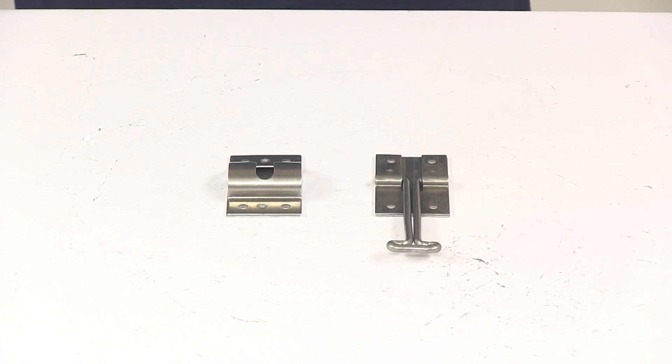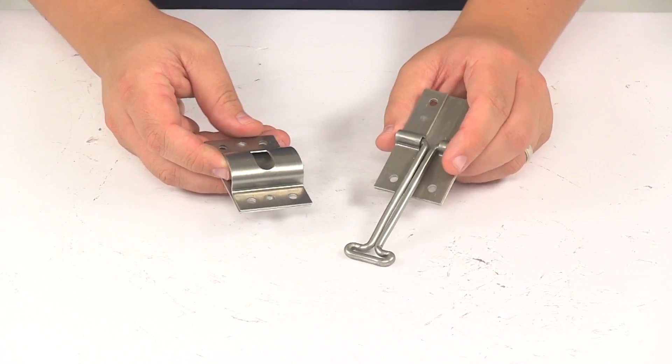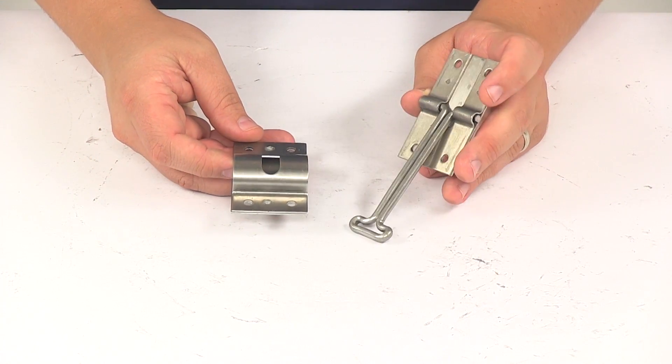Today we're going to be taking a look at the hook and keeper for enclosed trailers. Now a hook and keeper is used to hold doors and windows open on your enclosed trailer.